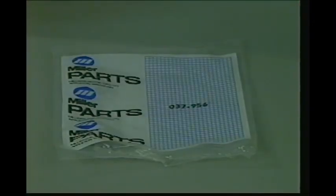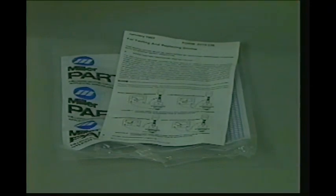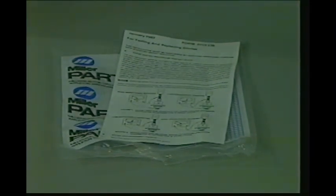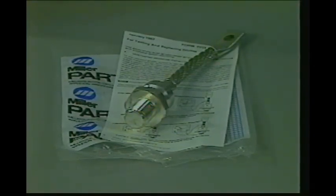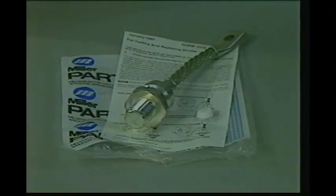There are a number of items in the service parts bag. The first is a set of instructions for replacing the diode. The next item we find is the diode itself. There's also a small package of heat sink compound. This material is a good thermal conductor which will allow efficient heat transfer from the diode to the heat sink.